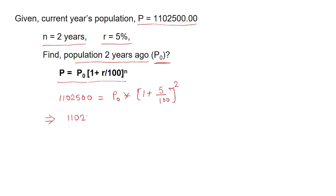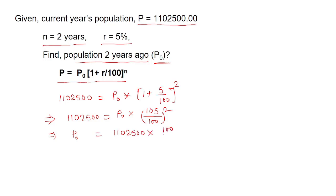After simplifying, 1,10,25,000 equals P0 multiplied by 105 divided by 100, raised to the power 2. Therefore, P0 equals 1,10,25,000 multiplied by 100 divided by 105, raised to the power 2. After simplifying, P0 equals 1,00,00,000.